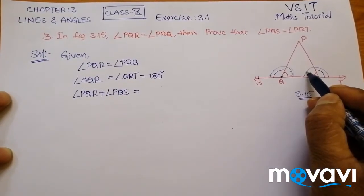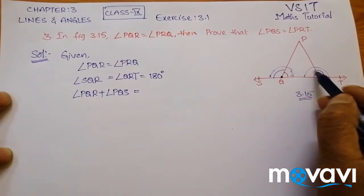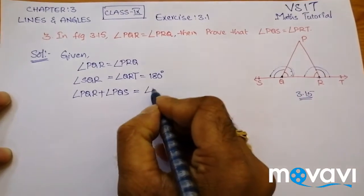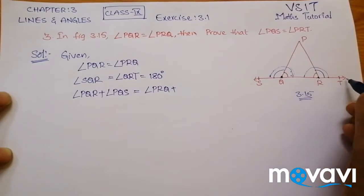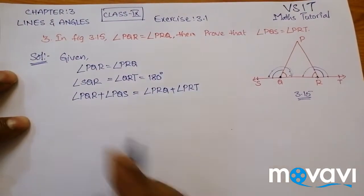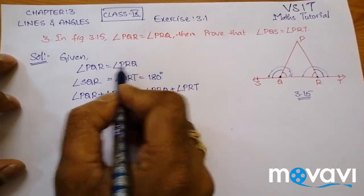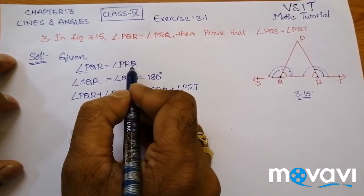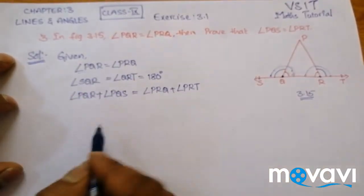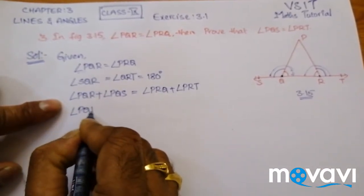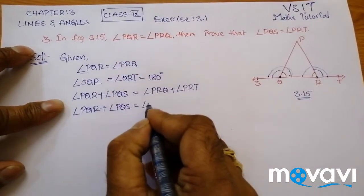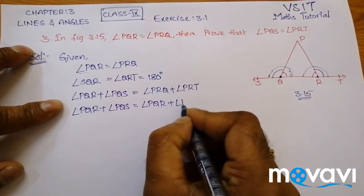What is angle QRT? It is the sum of angle PRQ plus angle PRT. Since the given data tells us angle PQR equals angle PRQ, in place of PRQ I can write PQR. So: angle PQR plus angle PQS equals angle PQR plus angle PRT.